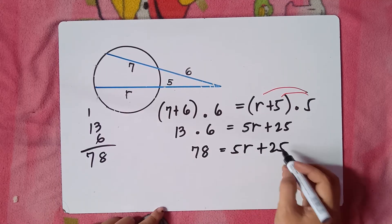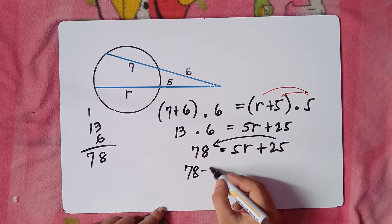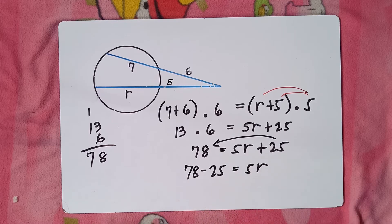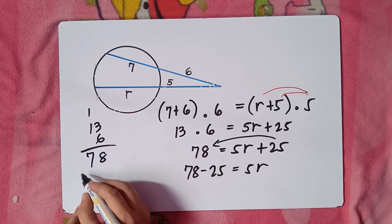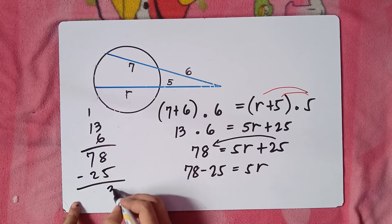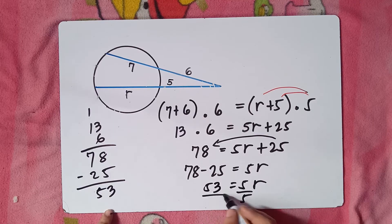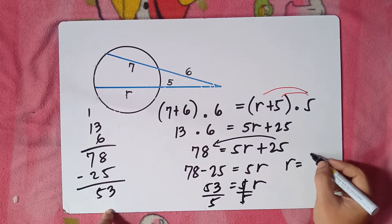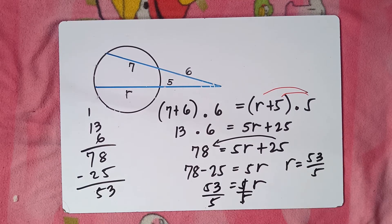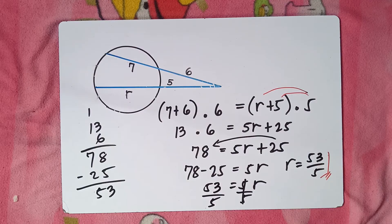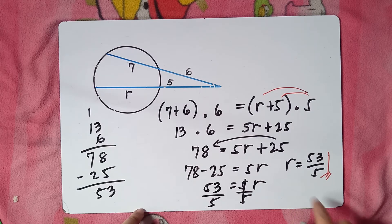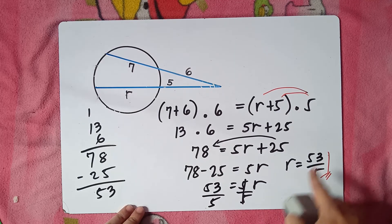To get the value of r, transpose 25 from right to left: 78 minus 25 equals 5r, so 53 equals 5r. Divide both sides by 5, so r equals 53 over 5. Check if we can reduce — we cannot reduce 53 and 5, so that would be our final answer. You can change that to a mixed number if you want, but 53/5 is acceptable.